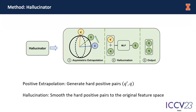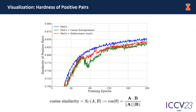Following that, we would like to dive into the hallucinations. To reduce the mutual information, we apply a symmetric extrapolation to push feature vectors Q to the opposite directions of K. Then we additionally introduce a hallucination process to introduce smoothness into the learning process. Eventually, we convert Q prime to Q hat and output Q hat and K. We visualize the cosine similarities of the pairs with three baselines: MoCo, MoCo with linear extrapolations, and MoCo with hallucinators.